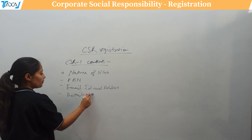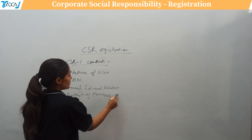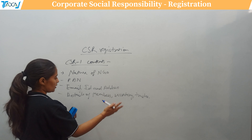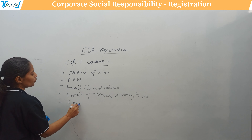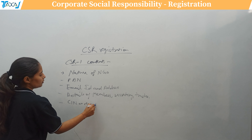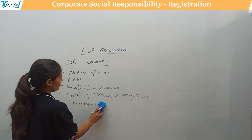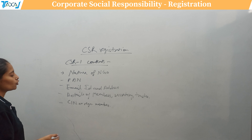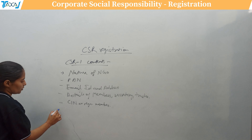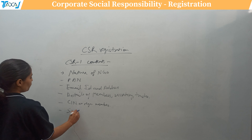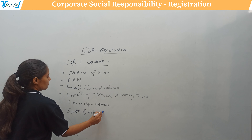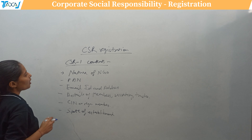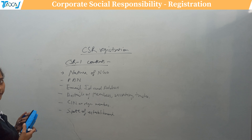The form also requires details of members, secretary, and trustees. Additionally, you need the CIN and registration number through which your establishment is registered on MCA, along with the state of establishment. These are the basic contents of the CSR-1 form.